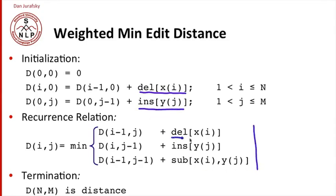And similarly, in the recurrence relation, we're going to add a special deletion, insertion, and substitution cost. How much does it cost to delete that particular character, insert that particular character? And then we'll end up with the same termination condition.